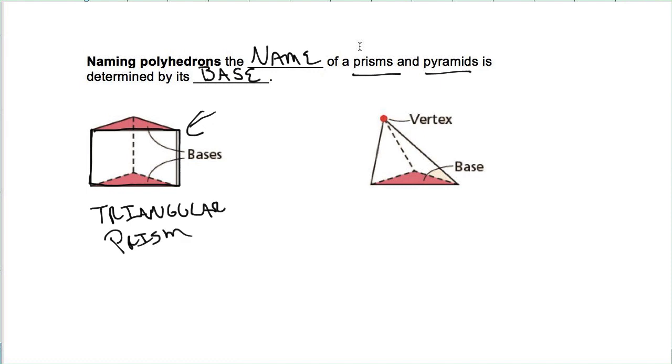Prisms always have two bases. Pyramids just have that one. They meet up here at that vertex. So what is this red part right down there? Well, that is a triangle. So this is a triangular pyramid.